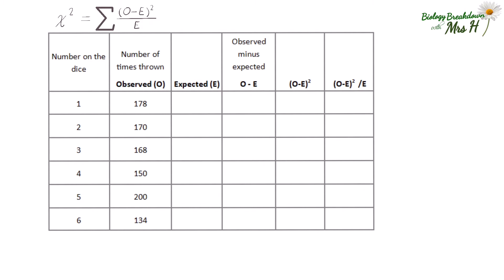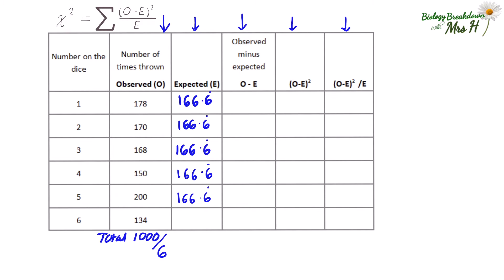To carry out the chi-squared you need to add extra columns to your results table. You have your observed results which we call O, then a column for your expected results, the observed minus the expected, the observed minus the expected squared, and finally the observed minus the expected squared divided by the expected. Because we are expecting each side of the dice to be thrown the same number of times we simply divide the total number of throws of a thousand by six, which gives us 166.6 recurring, and put that in the expected column.